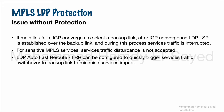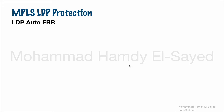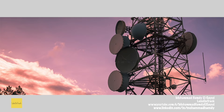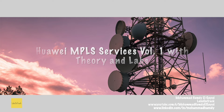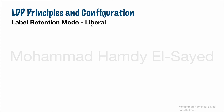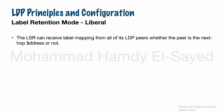LDP Auto Fast Reroute (FRR) can be configured to quickly trigger services traffic switchover to a backup link to minimize service impact. LDP Auto FRR uses liberal label retention mode. In this mode, an LSR can receive label mappings from all of its LDP peers, whether the peer is the next-hop address or not and whether the peer was preferred in the IGP selection or not, so that it can retain all label mappings and keep them ready.